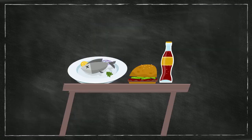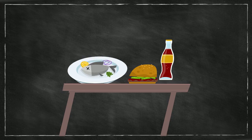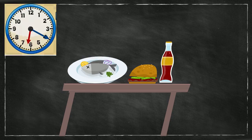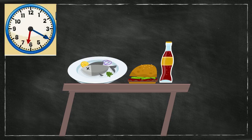Elapsed time is the amount of time that passes from the start of an event to its end. In this example, it is how much time goes from 3:35 p.m. to 6:20 p.m., and of course an important tool that helps us here is a clock.